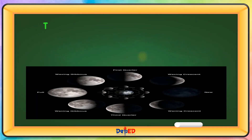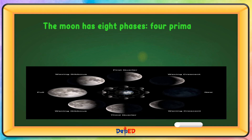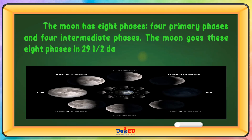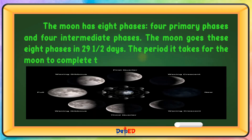The Moon has eight phases: four primary phases and four intermediate phases. The Moon goes through these eight phases in 29 and a half days. The period it takes for the Moon to complete the phases is called a month.